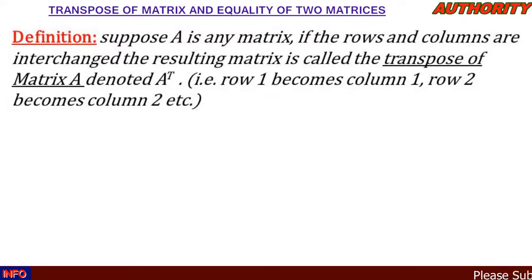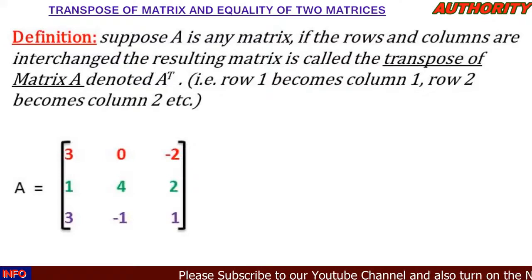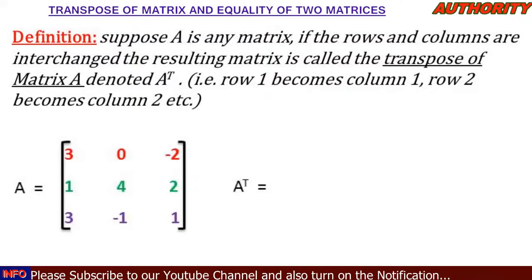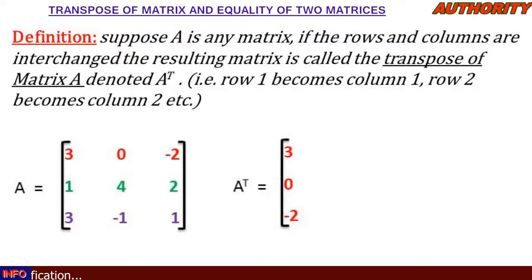Let's take an example. We have matrix A: [3, 0, -2; 1, 4, 2; 3, -1, 1]. To find the transpose of this matrix, we are going to interchange the rows and columns. The first row becomes the first column — we have 3, 0, -2 as the first row, so it becomes our first column: 3, 0, -2.